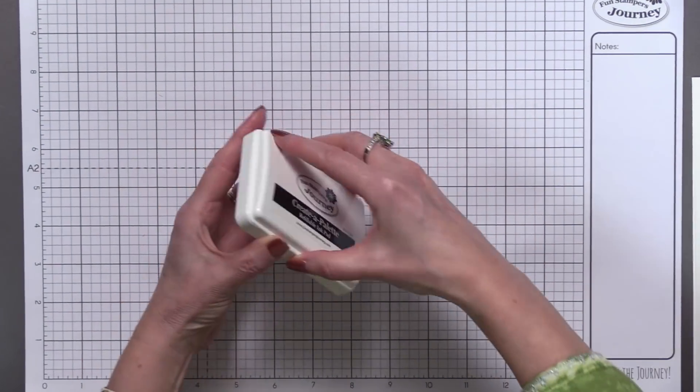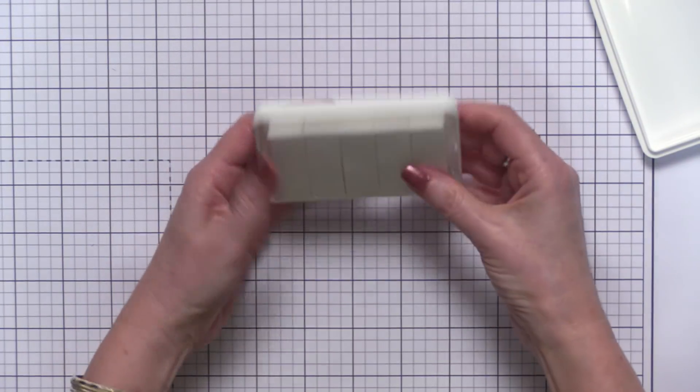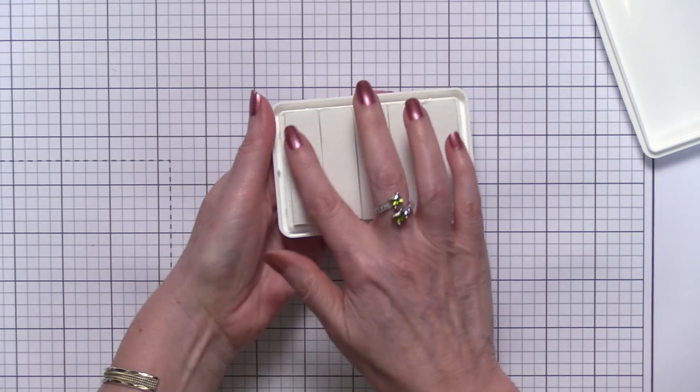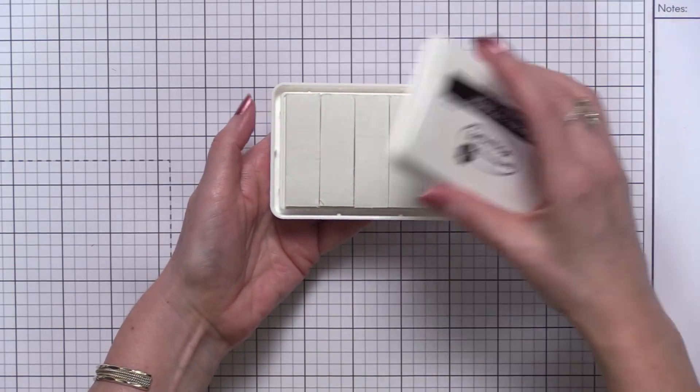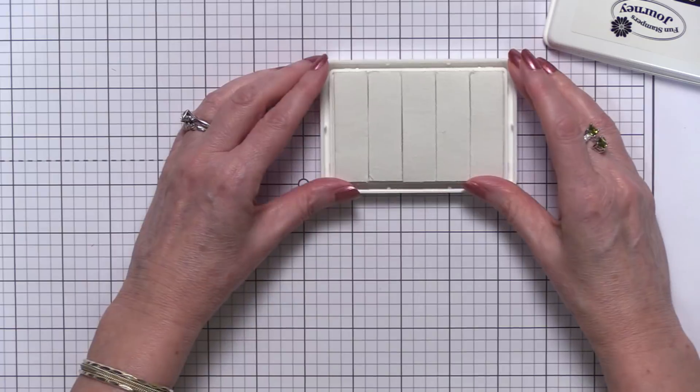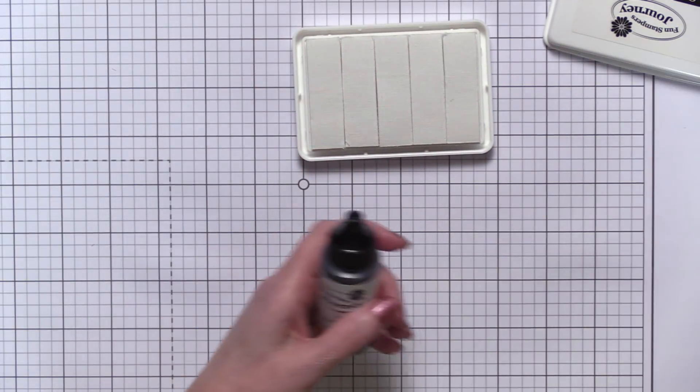And when you open it up, you will see that it comes completely blank and dry with five strips. The idea is you're going to create your own ink pad using your own special color combination.